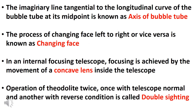The imaginary line tangential to the longitudinal curve of the bubble tube at its midpoint is known as the axis of bubble tube, also called axis of level tube.